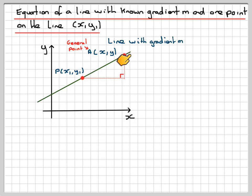And the line we know has a gradient m. So if we draw this in here, we can say that this distance here is y minus y1, and that this distance is x minus x1.